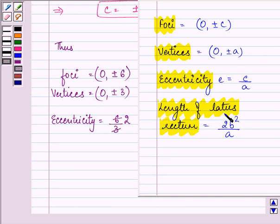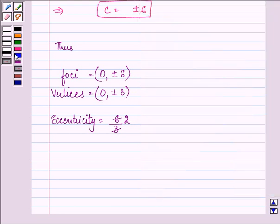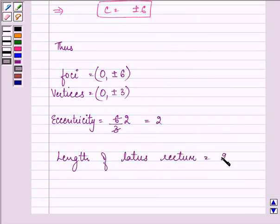And, lastly, the length of latus rectum. So, we have the length of latus rectum as 2 into b square, which is 27, by a, that is found out to be 3. On simplifying, we have the answer as 18.